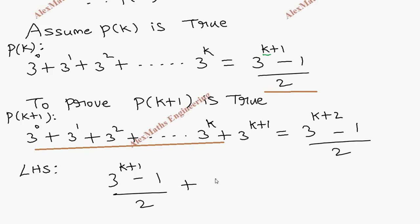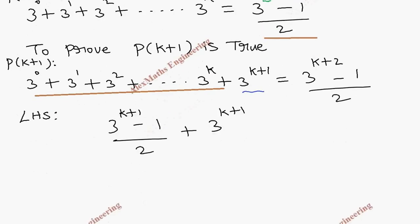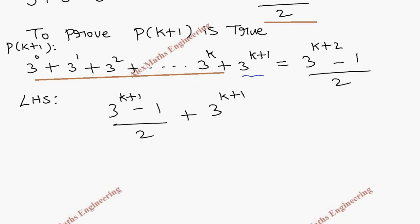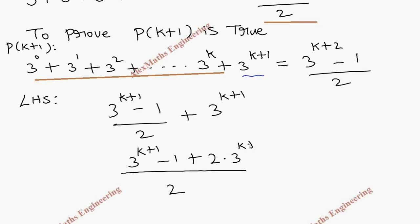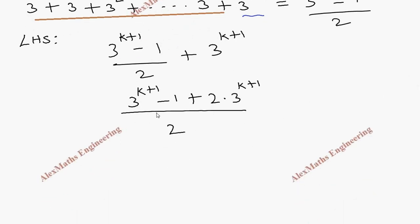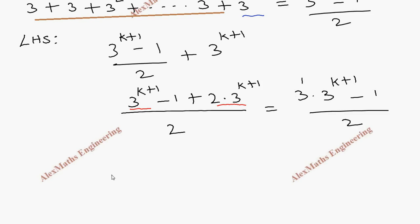We take the LCM, which is 2. So we get 3 power k plus 1 minus 1 plus 2 times 3 power k plus 1, all over 2. We combine the like terms: 3 power k plus 1 and 2 times 3 power k plus 1 gives 3 times 3 power k plus 1, with the extra minus 1, all divided by 2. Since 3 times 3 power k plus 1 equals 3 power 1 times 3 power k plus 1, we combine the powers to get 3 power k plus 2 minus 1 by 2.